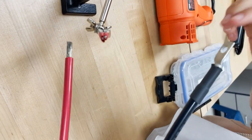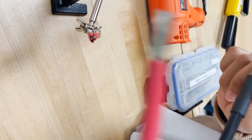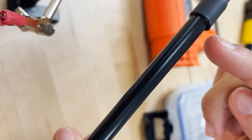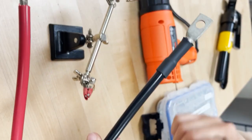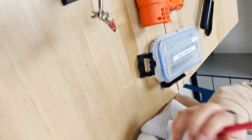The sign that the wire is done heating is when the adhesive leaks out. As you can see, it's a little shiny here, so that means that the glue has come out and that the wire is done shrinking.